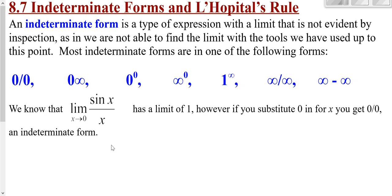Whenever you get an indeterminate form, you can use L'Hôpital's Rule. Indeterminate form is not just 0 over 0. It could be 0 times infinity — something extremely close to 0 times something extremely big — or 0 raised to the 0, or infinity raised to the 0, or 1 to the infinity, or infinity over infinity, or infinity minus infinity. These are all indeterminate forms, and if you have any of them when looking at limits, you can always use L'Hôpital's Rule.